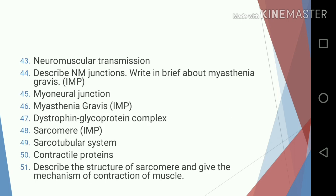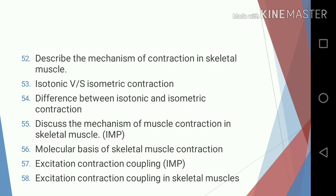Forty-three, neuromuscular transmission; forty-four, describe neuromuscular junctions and write in brief about myasthenia gravis; forty-five, myoneural junction; forty-six, myasthenia gravis; forty-seven, dystrophin glycoprotein complex; forty-eight, sarcomere; forty-nine, sarcotubular system; fifty, contractile proteins; fifty-one, describe the structure of sarcomere and give the mechanism of contraction of muscle; fifty-two, describe the mechanism of contraction in skeletal muscle.